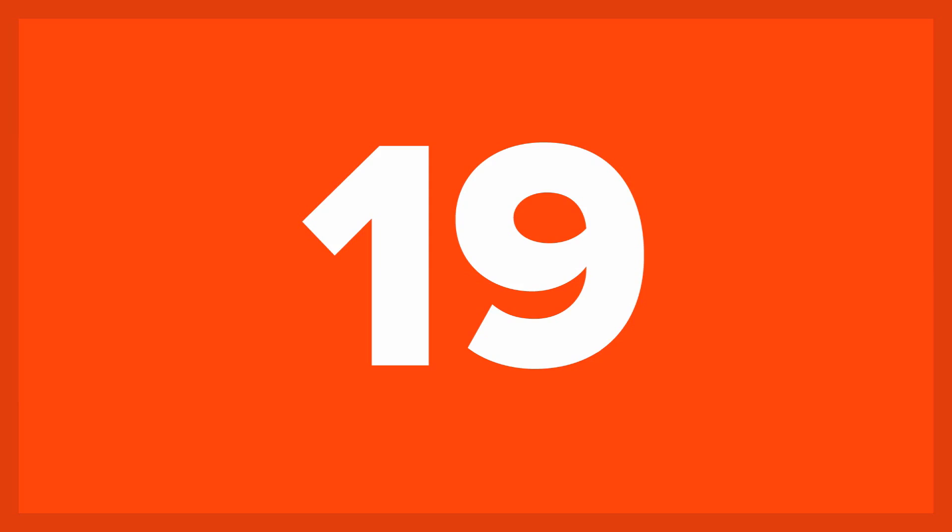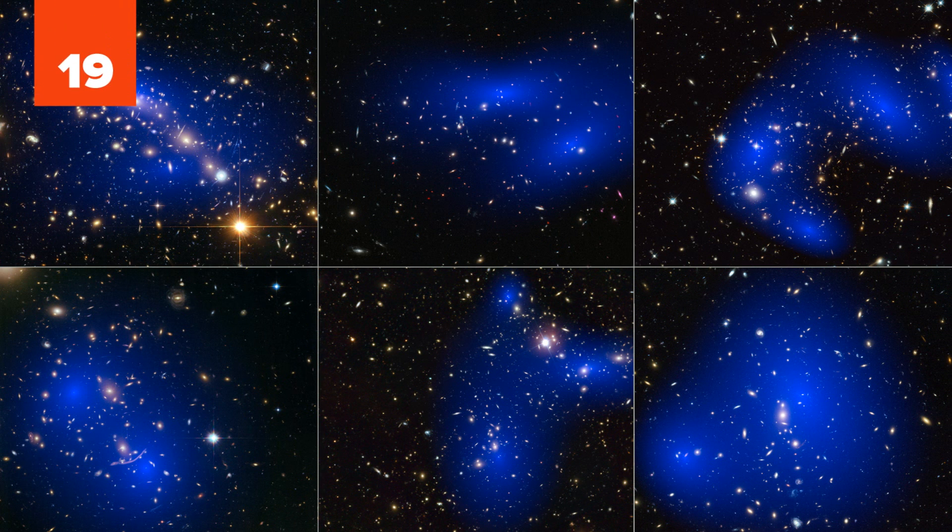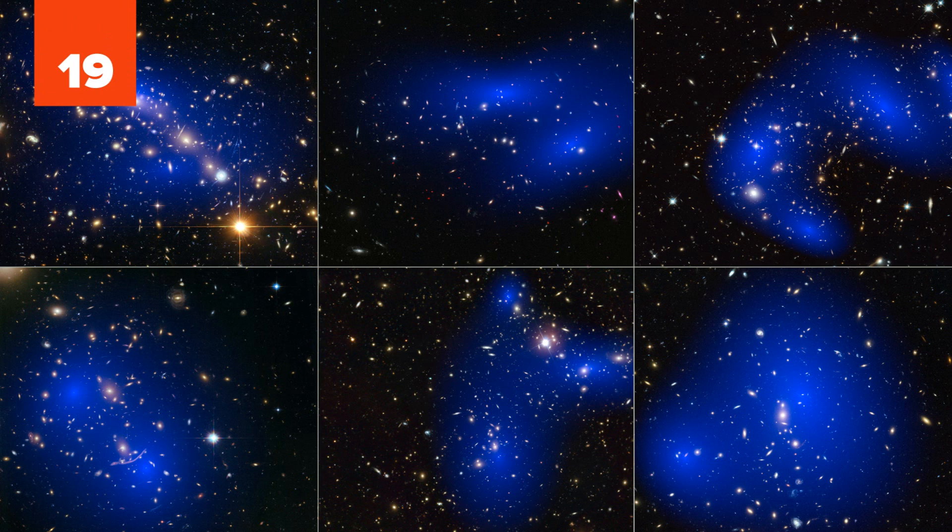Number 19: What Is Dark Matter? The truth is, we really don't know exactly what dark matter is. However, scientists have been able to pin down some of its characteristics. For example, we know that it is dark, meaning that it does not take the form of stars or planets that are seen.